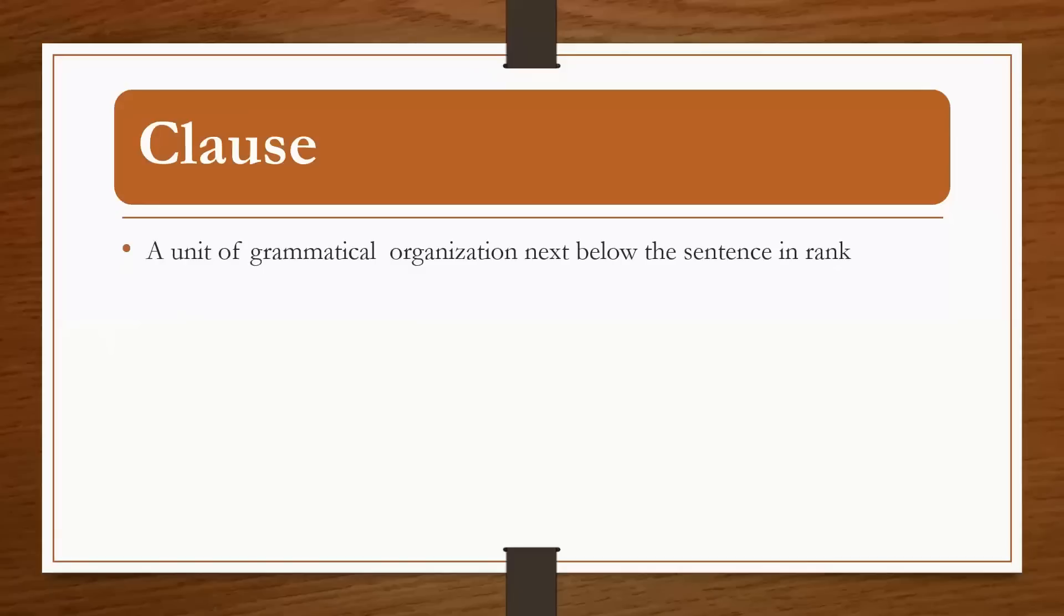What is grammatical organization? For example, words form larger units called phrases, phrases form clauses, and clauses form sentences. The clause is next below the sentence in rank. Every clause is part of a sentence, but not every sentence is a clause.